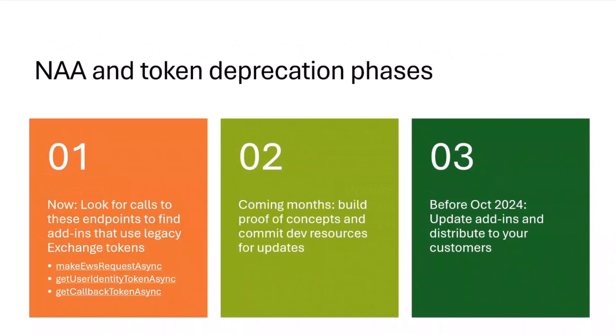In terms of phases, phase one right now would be to look for calls to these particular endpoints. So in Office.js, there are these three APIs. If you see calls to this code in your source code, then that means these are going to break in October. So if it's makeEwsRequestAsync, getUserIdentityTokenAsync, or getCallbackTokenAsync, then you need to change those to use Nested App Authentication.